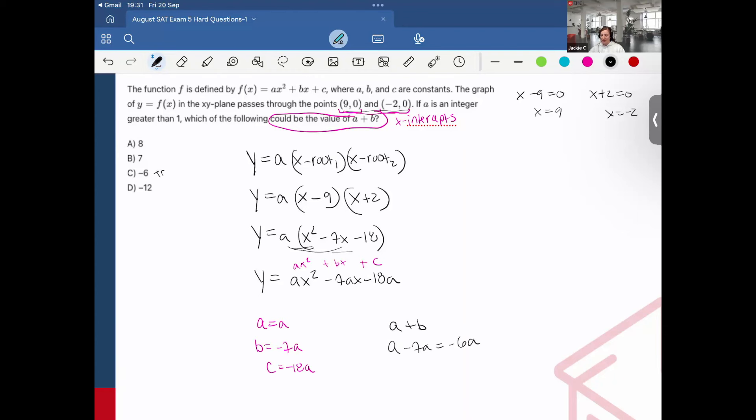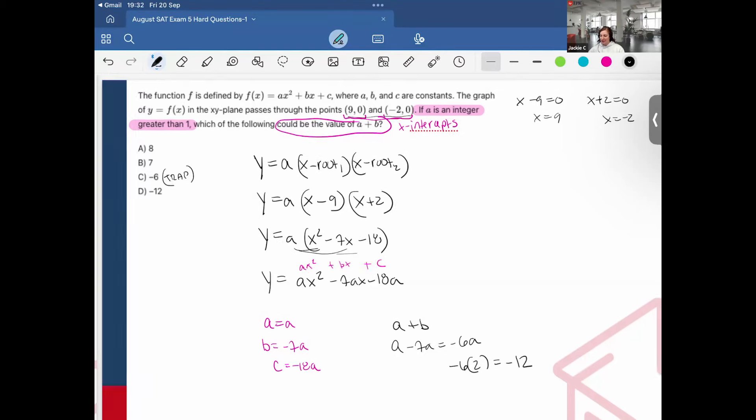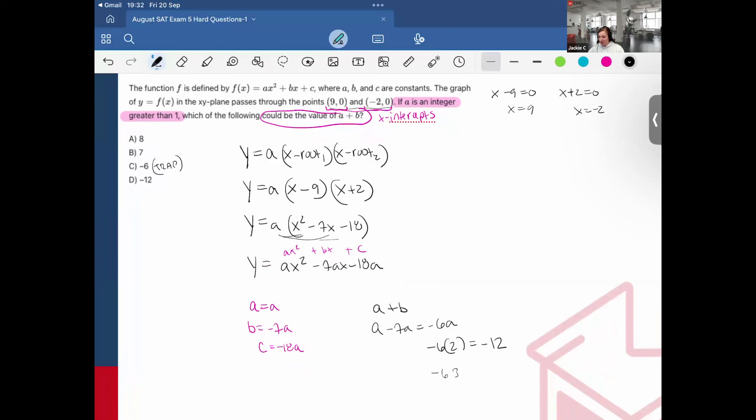That's the value. That's probably why c is there to serve as a trap. But important, it says that if a is an integer greater than 1, what's the next integer greater than 1? 2. So it's possible that a equals 2 and negative 6a equals negative 12. Of course, it's also possible that it could be 3, it could be 4. However, you see it keeps getting smaller and smaller and smaller. Our only viable option then is correct answer choice d, negative 12.